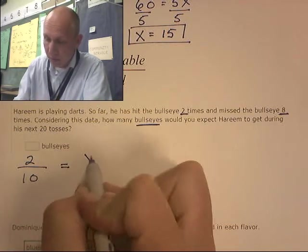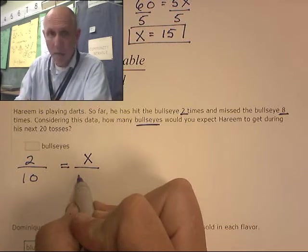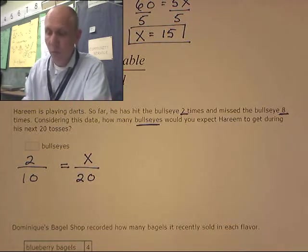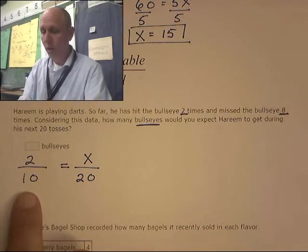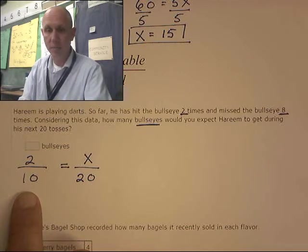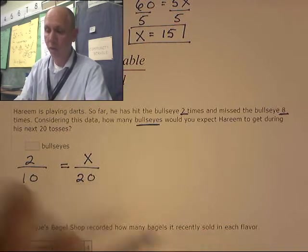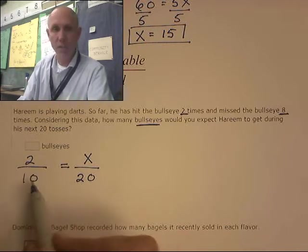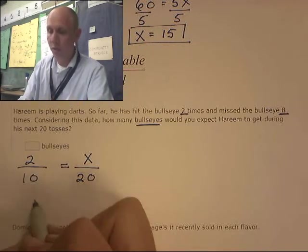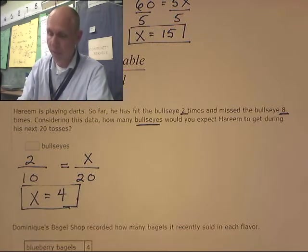Well, that's the favorable, the bullseyes, over how many tosses? 20. So, favorable over possible, favorable over all equals favorable over all. And I can solve this. I can do this one in my head. I'm just doubling it. Ten went to 20. Two goes to four. We would expect four bullseyes out of that.